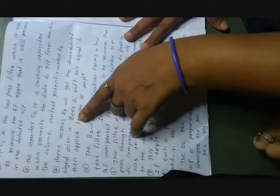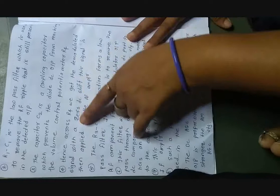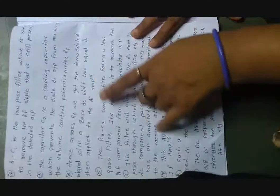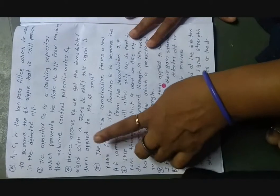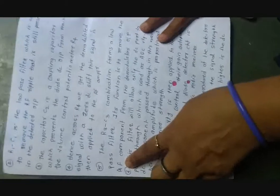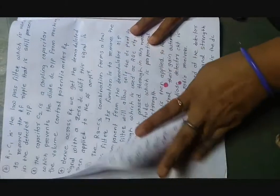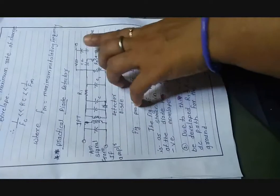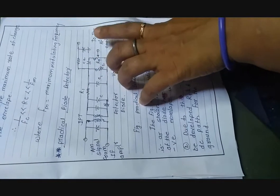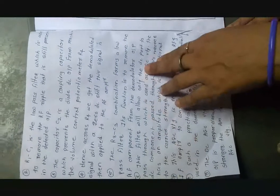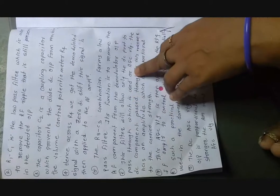Across R4, we get the demodulated signal with zero DC shift. This signal is then applied to the audio frequency amplifier. The next function is related to the R3 and C3 combination, which forms a low pass filter. This filter removes the AF component from the demodulated output. R3 and C3 filter out signals and noise coming from the audio frequency amplifier.